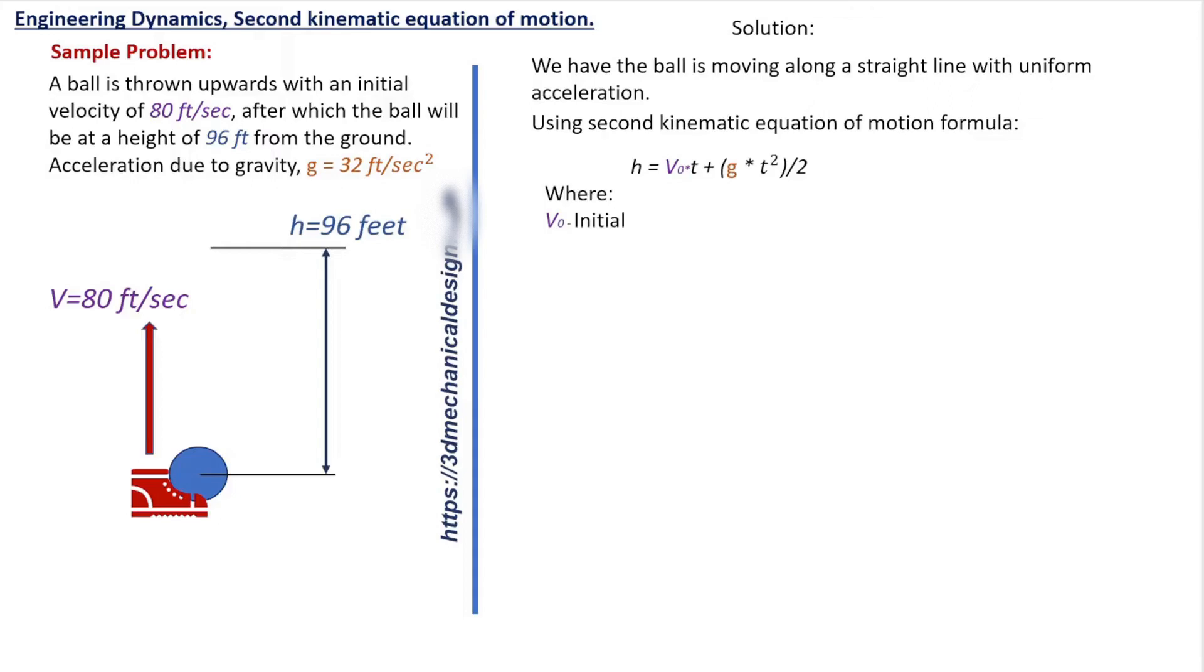Where V0 is initial velocity, V0 equals 80 foot per second. H, height, H equals 96 foot. T, time.